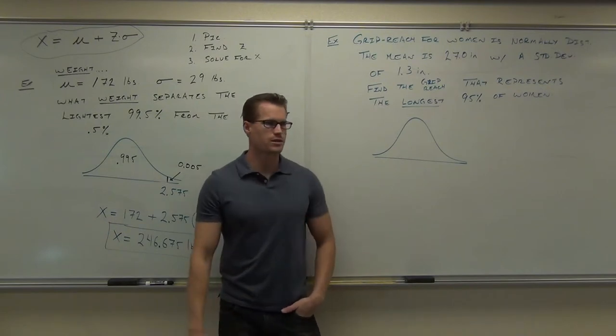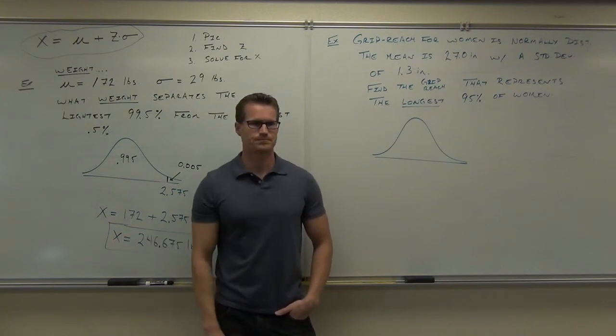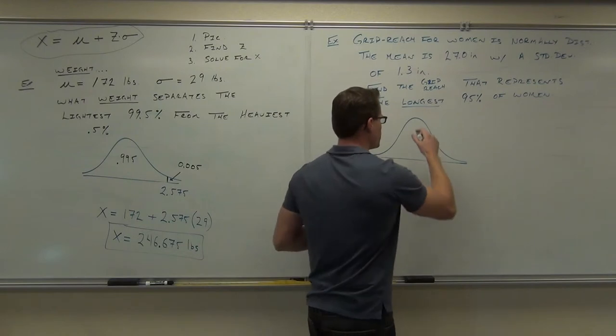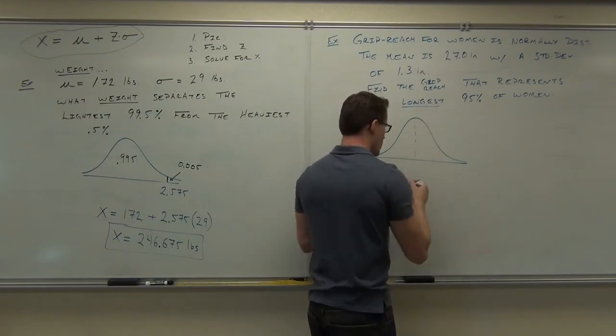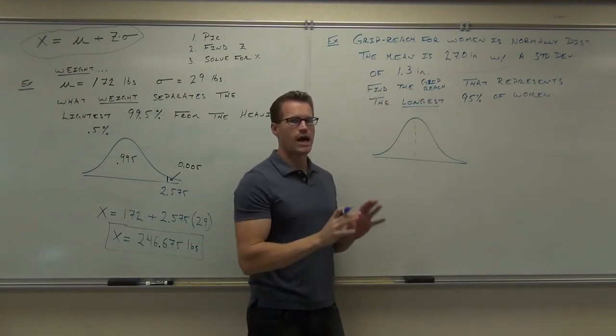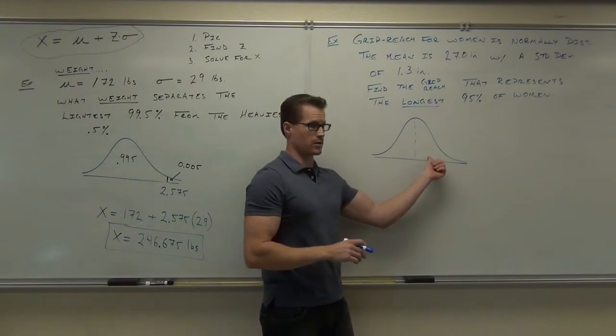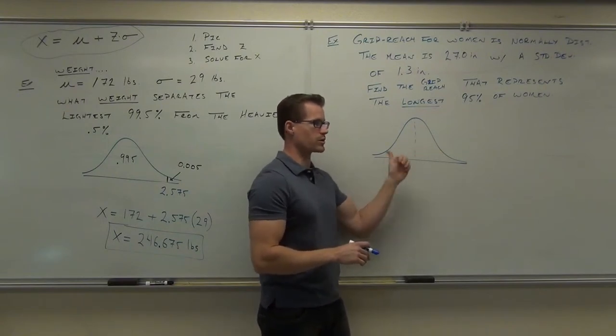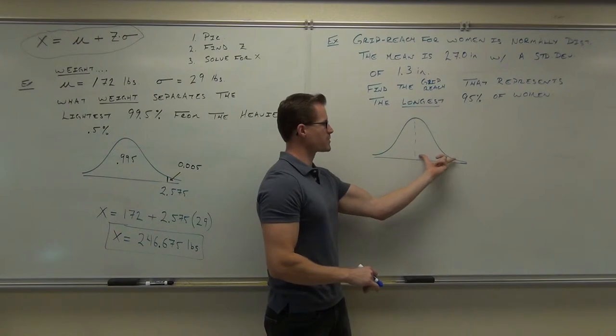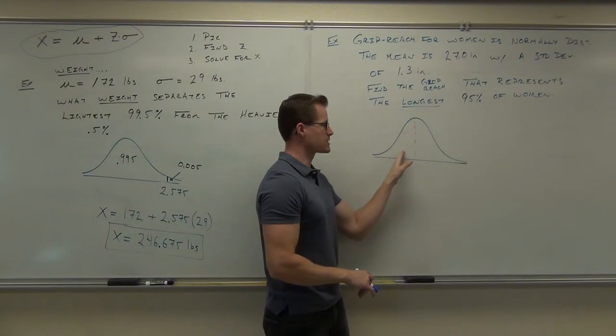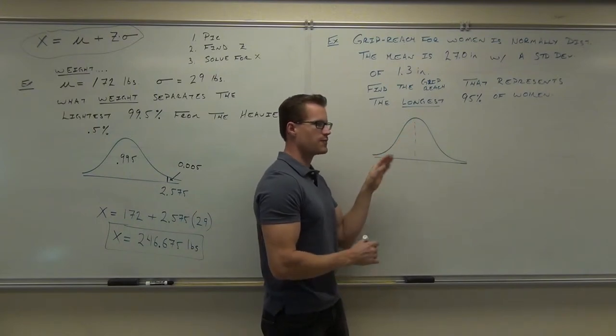Now the important part is not drawing this picture, it's figuring out where to put your line. We're looking for the longest 95 percent of women's grip, so the first thing I've told you to do here is identify the 50% mark. Identify just the 50/50 - identify what's the longest and what's the shortest. Which side represents the longest 50 percent? Is that the left side or the right side? This is the longest, okay? This would be short, long. Shorter is always on the left, so this is the longest 50 percent of women's arms. This is the shortest 50 percent.